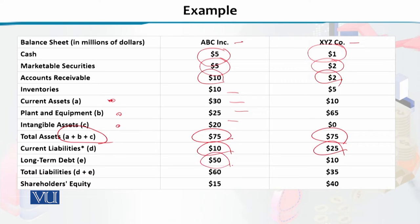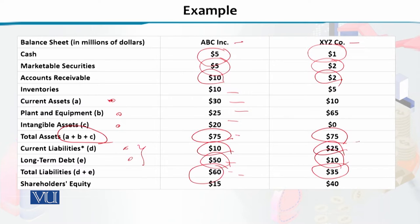Now for liabilities: current liabilities are $10 million for ABC and $25 million for XYZ. Long-term debt is $50 million for ABC and $10 million for XYZ. So XYZ has higher current liabilities while ABC has higher long-term debt. Total liabilities come to $60 million for ABC and $35 million for XYZ. Shareholder equity turns out to be $15 million for ABC and $40 million for XYZ — meaning XYZ has higher equity than ABC.